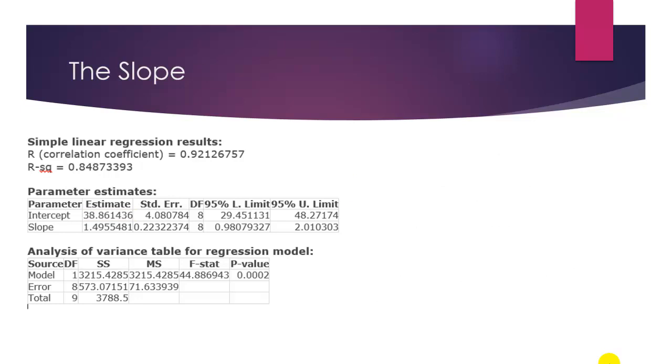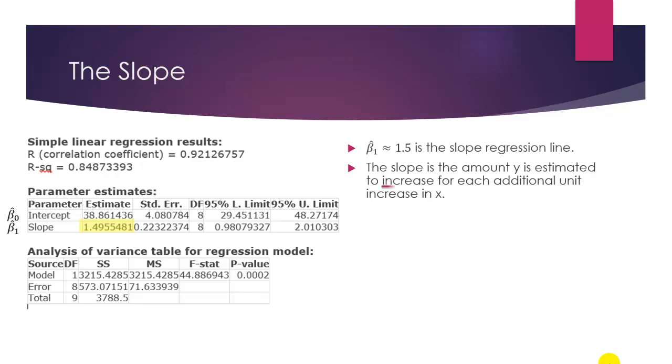So, on the StatCrunch output, we see that the estimate of the slope is 1.495548, et cetera. So, this means that we can approximate beta 1 hat, the slope of our regression line, to be approximately 1.5. The slope is the amount the predicted value of y increases for each additional unit increase in x.